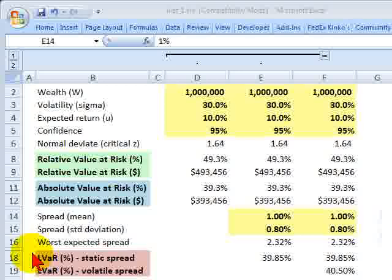In order to demonstrate liquidity-adjusted value at risk, I'd like to build up to it by looking first at relative VAR and then absolute VAR. We'll see that relative VAR is a special case of absolute VAR and that we only need to do one thing to convert absolute VAR into liquidity-adjusted VAR.